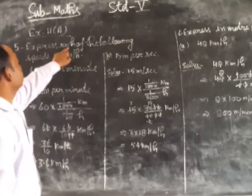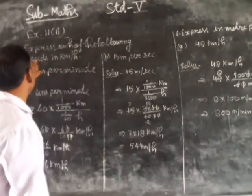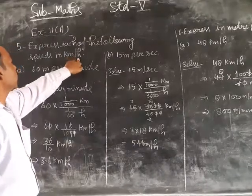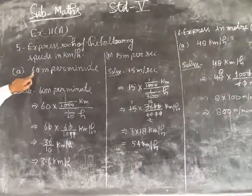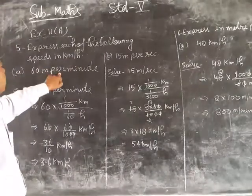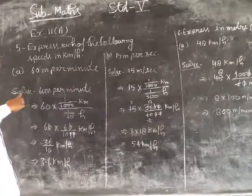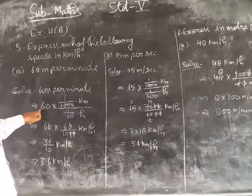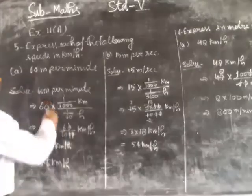For this problem, express the speed in kilometer per hour. Part (a) is 60 meter per minute. So, 60 meter per minute equals 60 meter per minute.